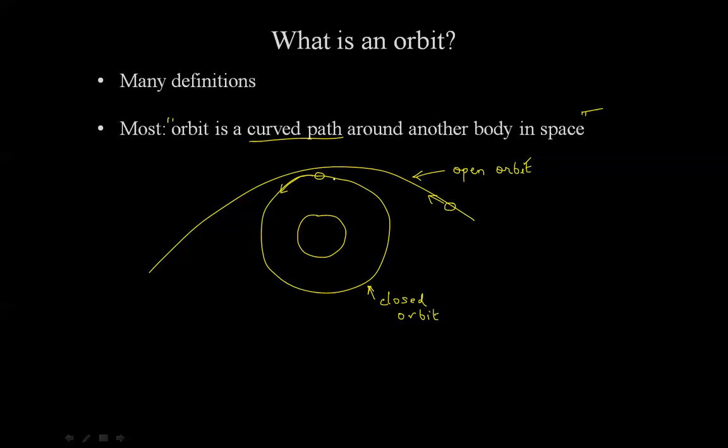Most planets, in fact all planets and all satellites follow closed orbits. Space probes and spacecrafts on interplanetary journeys follow open orbits. So the question remains, what is an orbit?